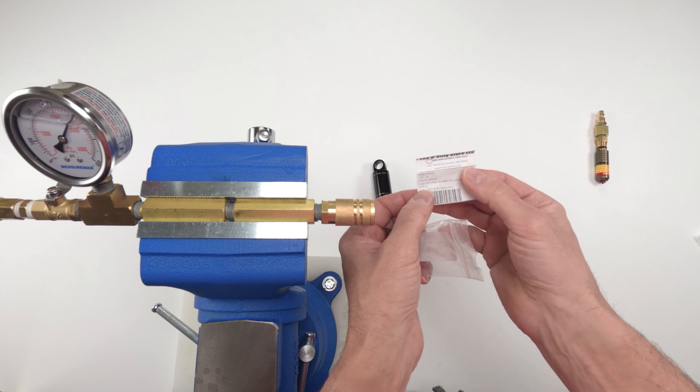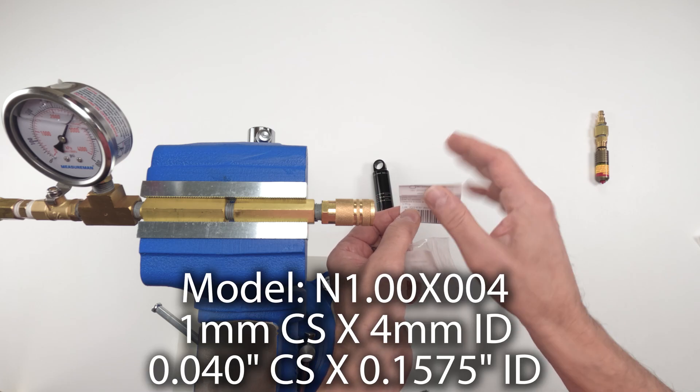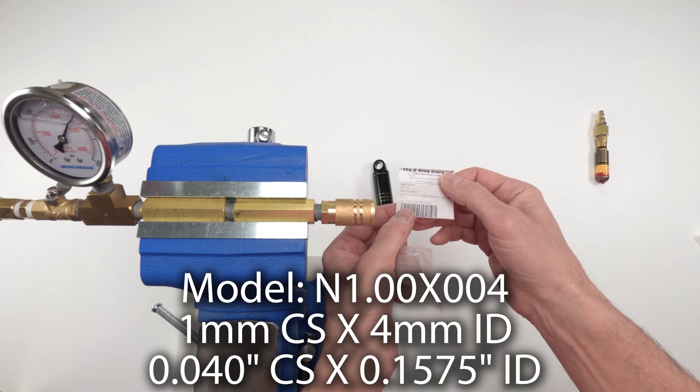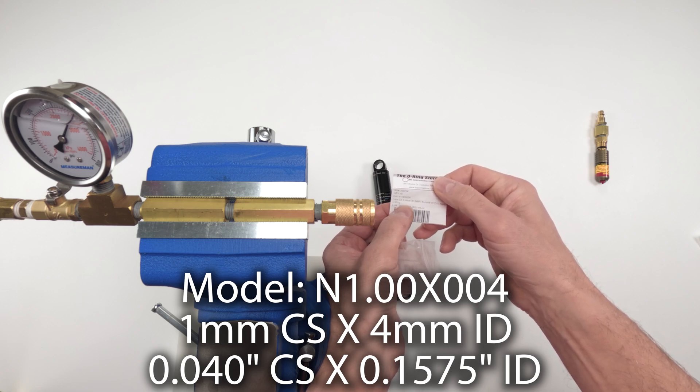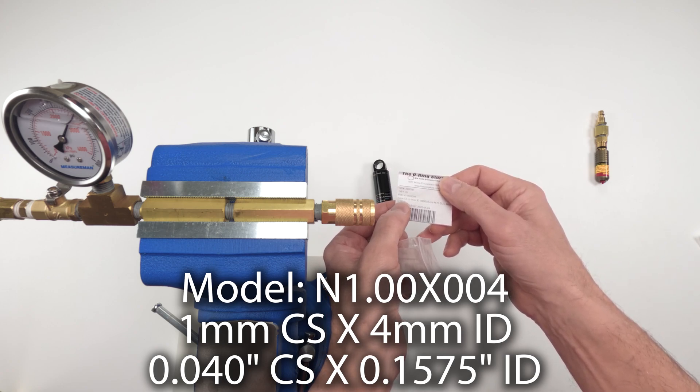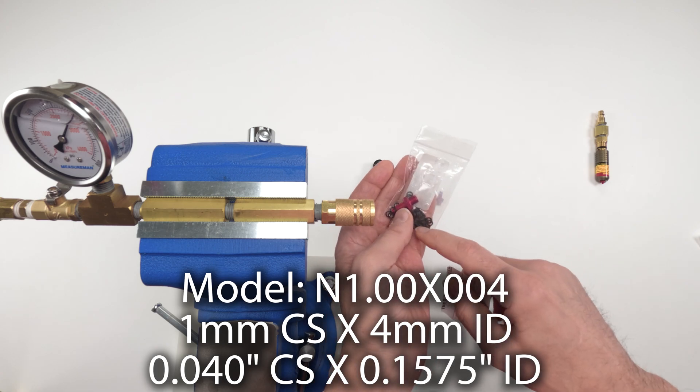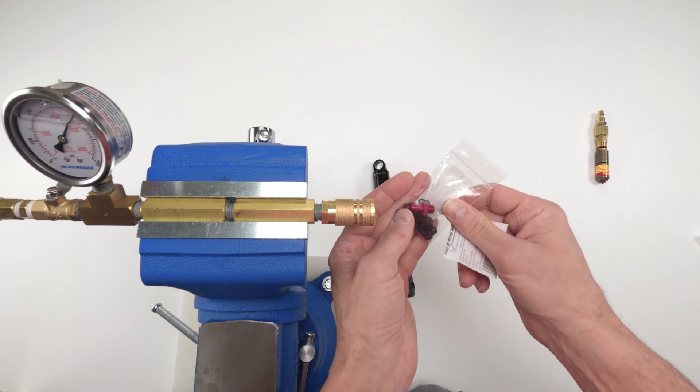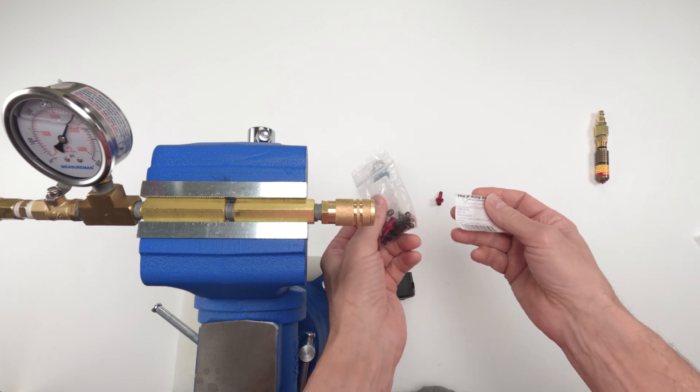As far as seals, you could buy them super cheap. I get them at the O-ring store, no affiliation by the way. I'll put the part number below. It's a four millimeter inner diameter, one millimeter thick seal. They're I think four cents each, so for two bucks you get 50 of them.